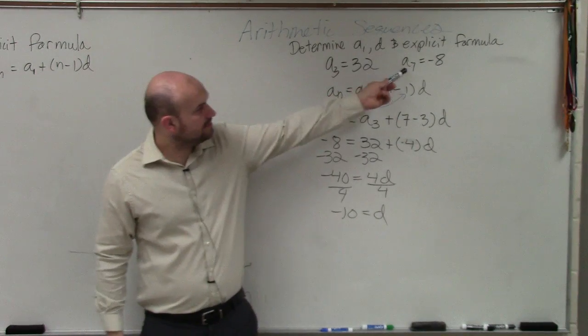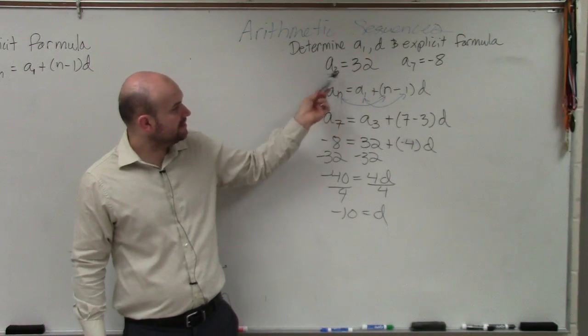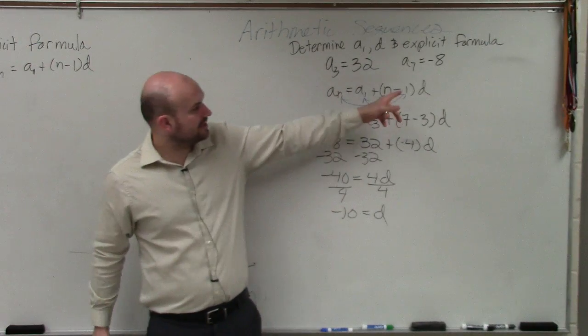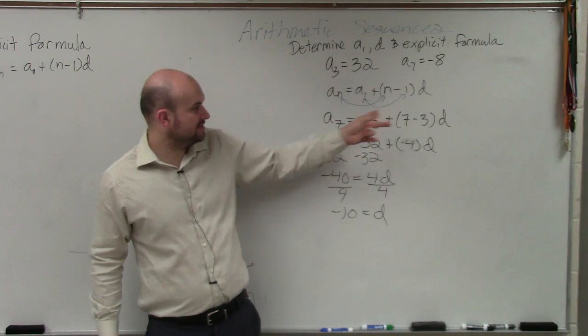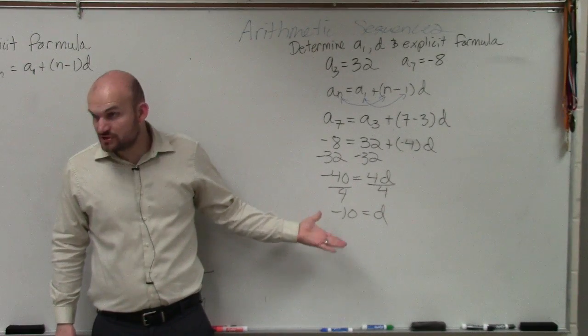Remember, a sub 7 is equal to negative 8. A sub 3 is equal to 32. And just remember what I wrote here. These numbers correspond with each other. So now we've got d, which is very good.